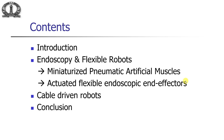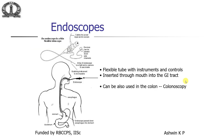The contents of this talk include an introduction, then we will look at a place where there is extreme flexibility — in an endoscope. We will cover endoscopy and flexible robots, miniaturized pneumatic artificial muscles, how to use these muscles to make actuated flexible endoscopic end effectors, cable-driven robots, and finally conclude.